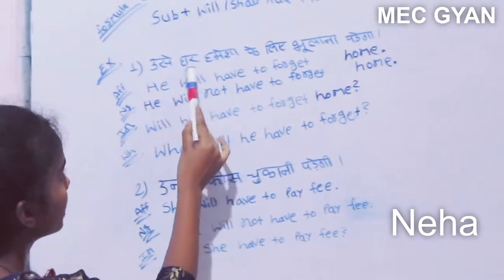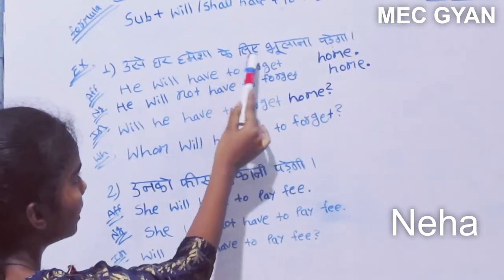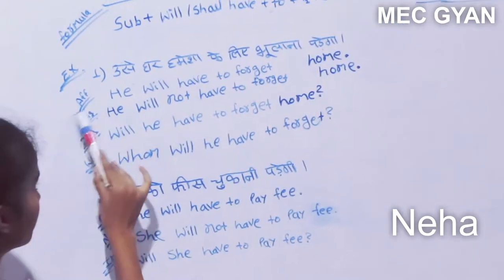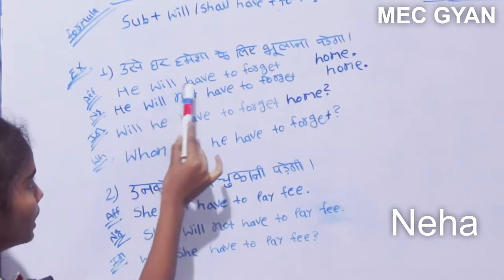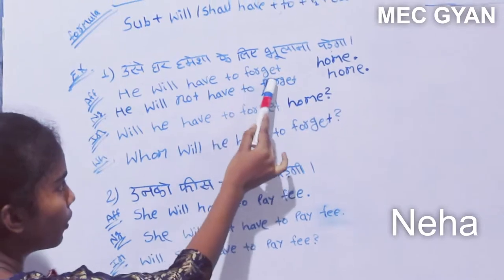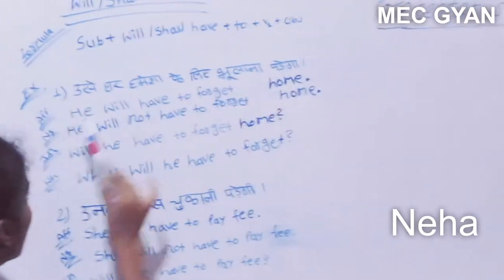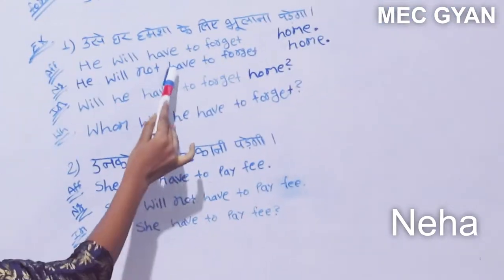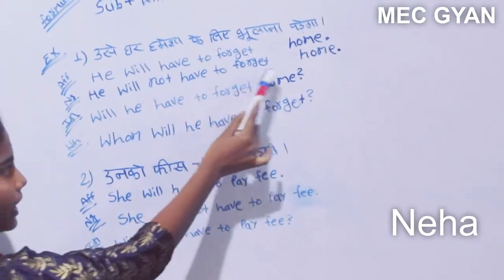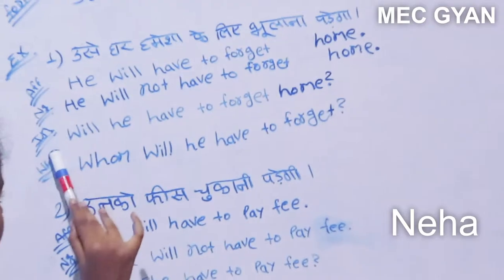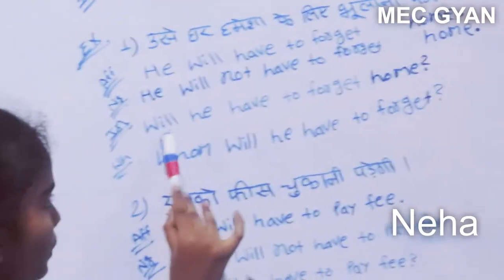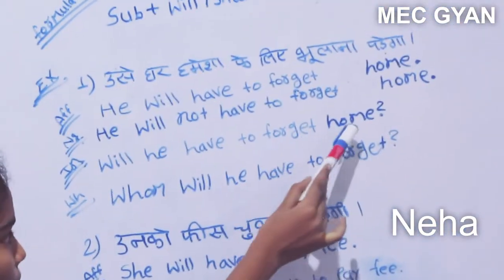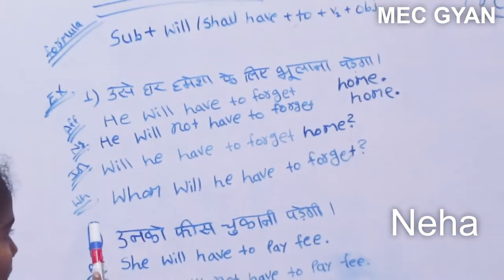First, affirmative: he will have to forget home. Negative: he will not have to forget home. Interrogative: will he have to forget home? And WH-question: where will he have to forget?